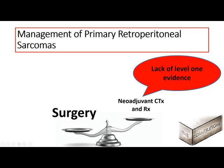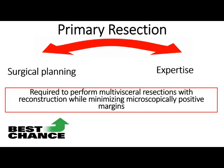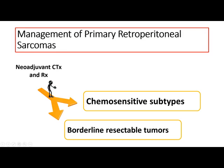The first lesson: the cornerstone of treating retroperitoneal sarcoma is surgery, and neoadjuvant chemoradiotherapy lacks Level 1 evidence for its role in management. Primary resection should be planned by expert hands, requiring multivisceral resection with reconstruction while minimizing microscopically positive margins. Neoadjuvant chemoradiotherapy is now restricted to chemosensitive subtypes like myxoid/round cell and leiomyosarcoma, or borderline resectable cases where neoadjuvant treatment can sterilize margins or facilitate resection.